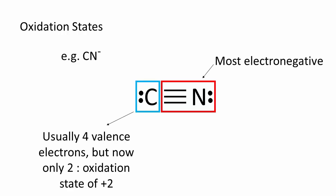A free carbon atom has four valence electrons, and now it only has two, so its oxidation state is positive two.